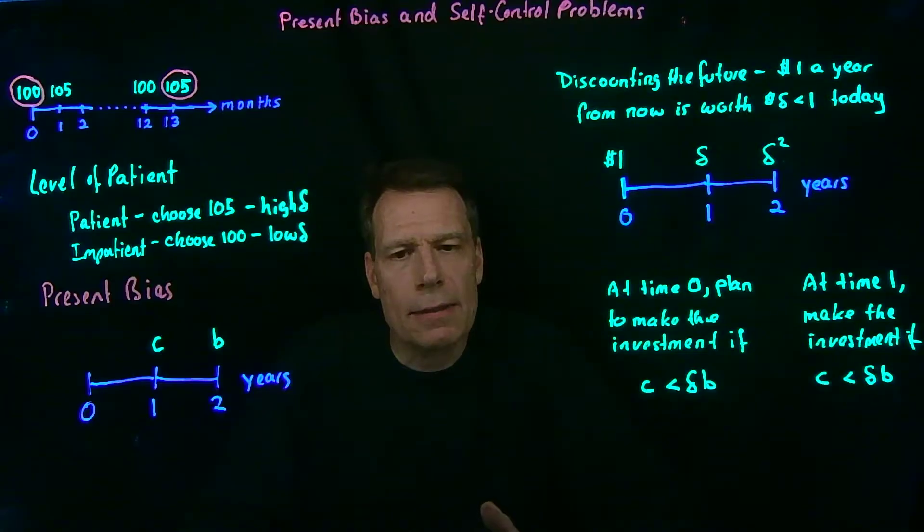Now, present biased individuals may have self-control problems in the sense that they'll make a plan for what they'll do in the future. But then when the future becomes the present, they won't execute that plan. They'll do something different. They'll be more impatient than they had planned to be. That doesn't happen in the standard economic framework. So how would we adjust that framework to account for behavior like that?